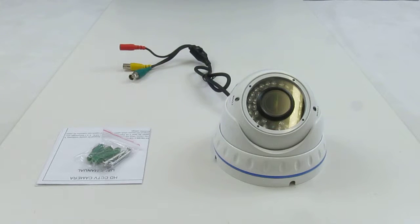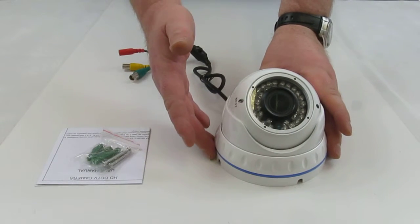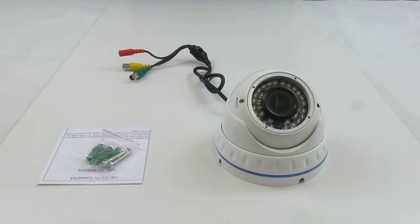The camera is approximately 13 centimeters wide by 11 or 12 centimeters high. It is what we call a verifocal camera. It has a 2.8 to 12 millimeter lens.